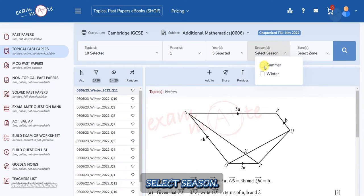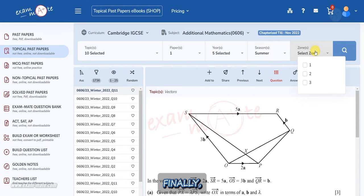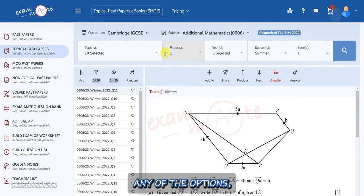Here, select season. Finally, choose your desired zones. If you do not select any of the options, it will show all items by default. Then we click on the search button.